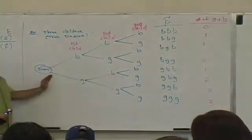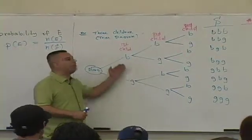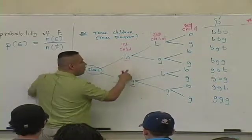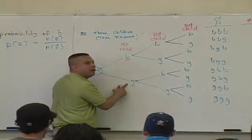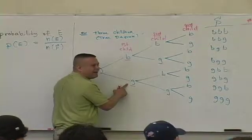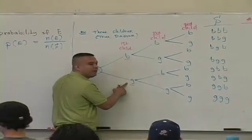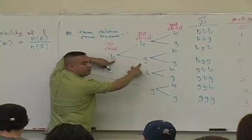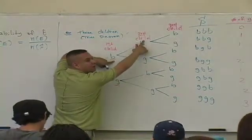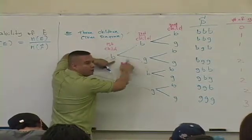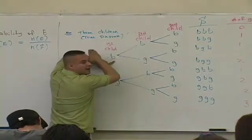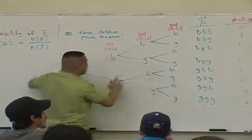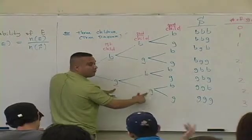One child at a time, and we're going to get all possible outcomes associated with having three children. For your first child, you have two options: a boy or a girl. Now you're going to have the next child. If you have the next child, what sexes can you possibly have for your second child? A boy or a girl again. The second child is not dependent on the sex of the first child — those events are independent. What you have first has no effect on what you have second.